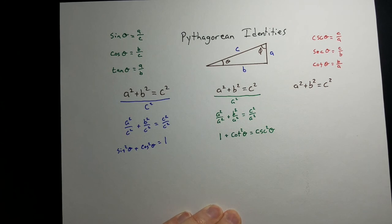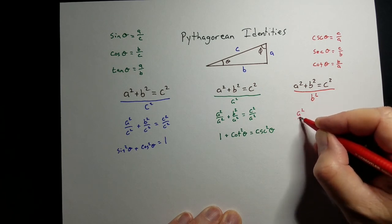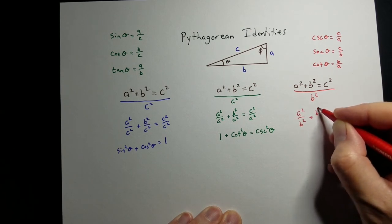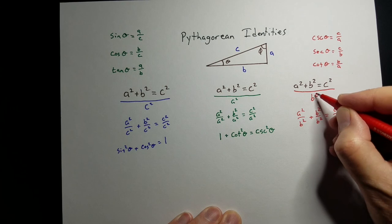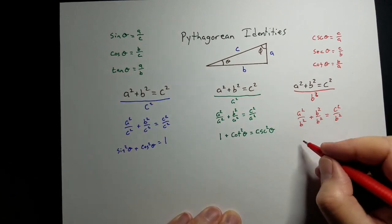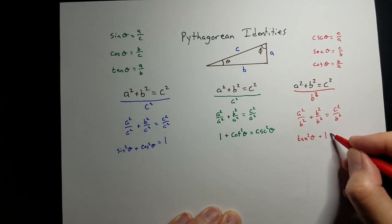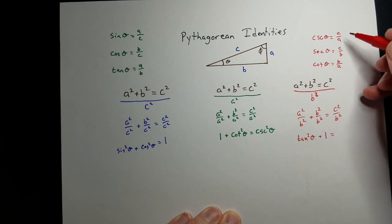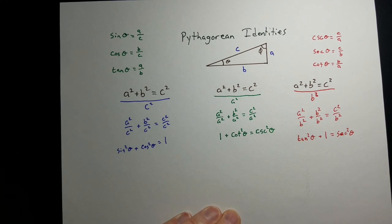And if we divide the last one by B squared, we get A squared over B squared plus B squared over B squared equals C squared over B squared. A over B, that's tangent squared theta plus B over B, that's 1, equals C over B. That's secant squared theta. And there's your third Pythagorean identity. So if you know this and you know your trig functions, you can find those.